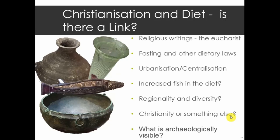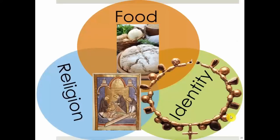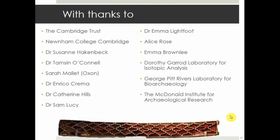Urbanization and centralization — something that keeps coming up in this session — shows differences between urban and rural places and what that means for foodways. In the increasing 7th-century world where settlements are centralizing, are people changing what they eat because the landscape itself is changing? Are we seeing increased fish in diet, regional diversity — is it Christianity or something else, an economic shift that happens to coincide with religious change? How much of this is isotopically visible? These are the questions I'm grappling with in my second year. Thank you.